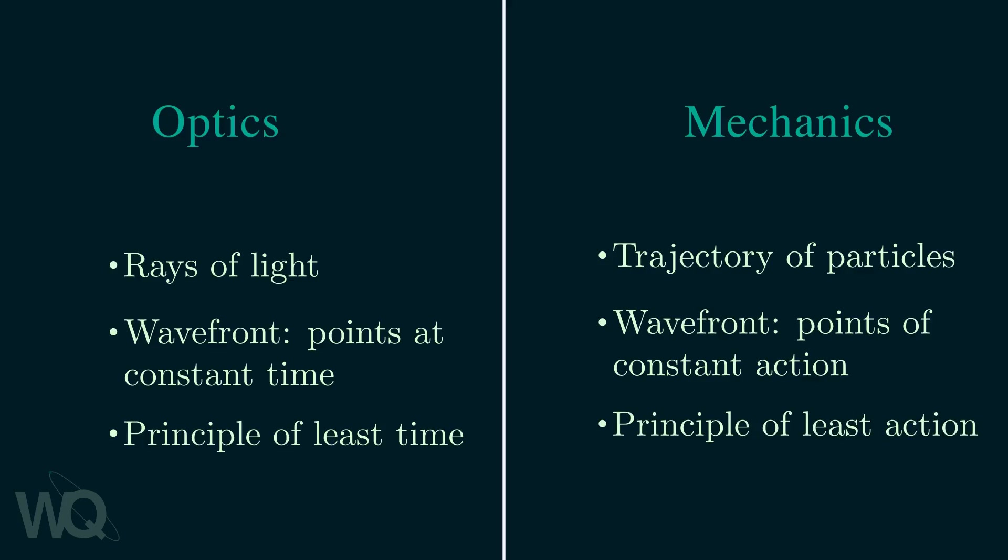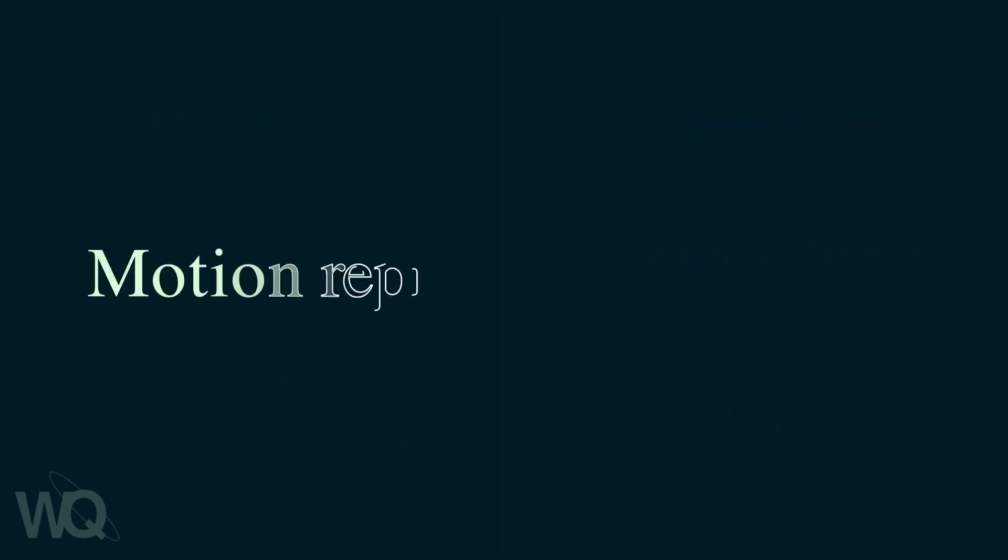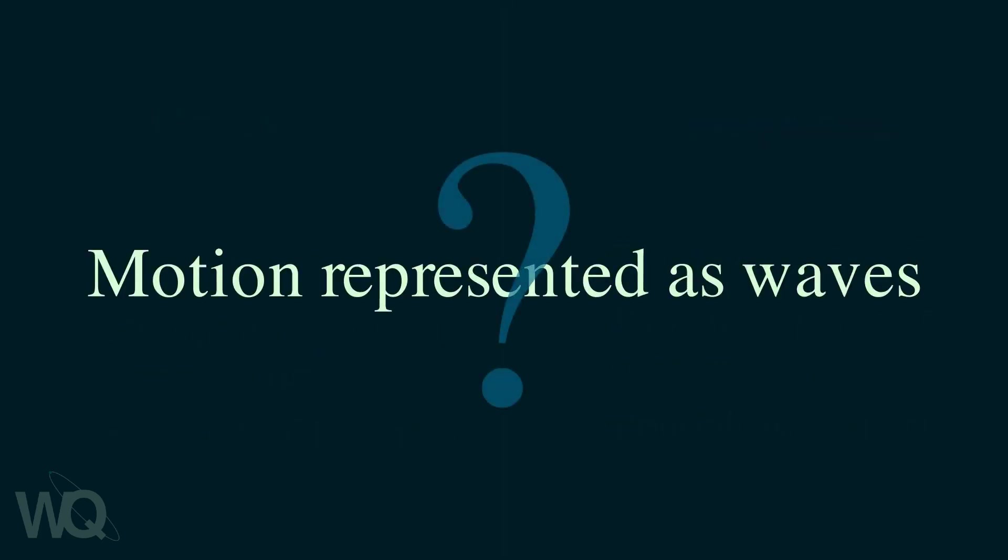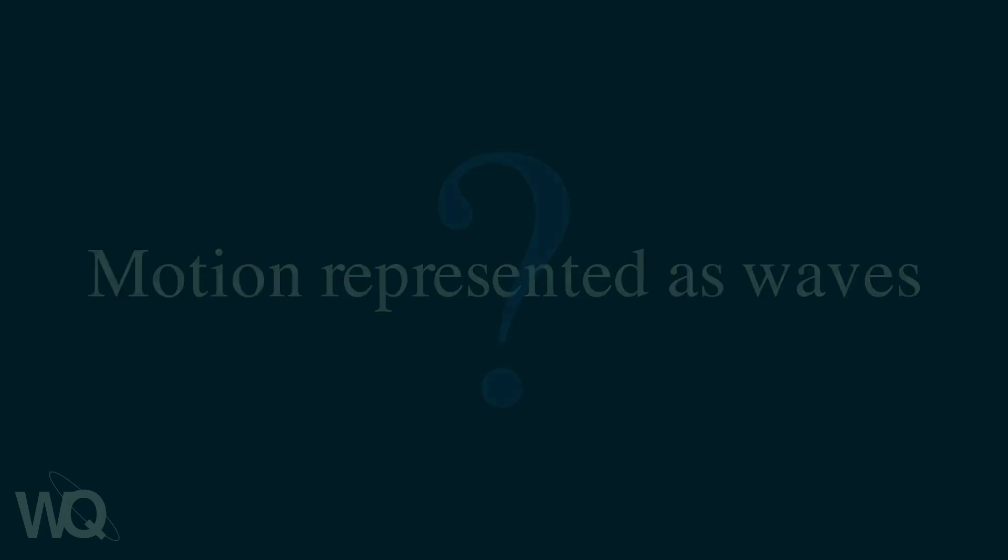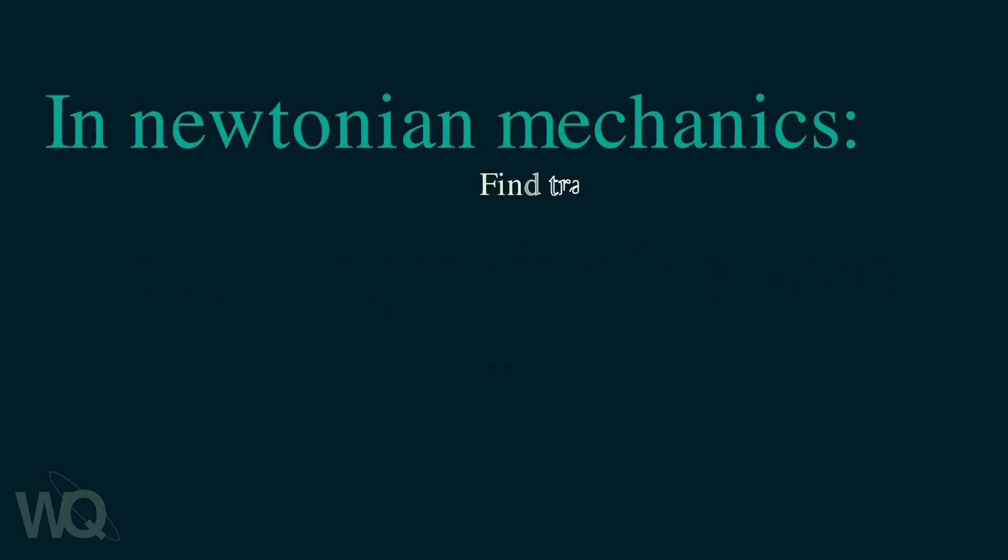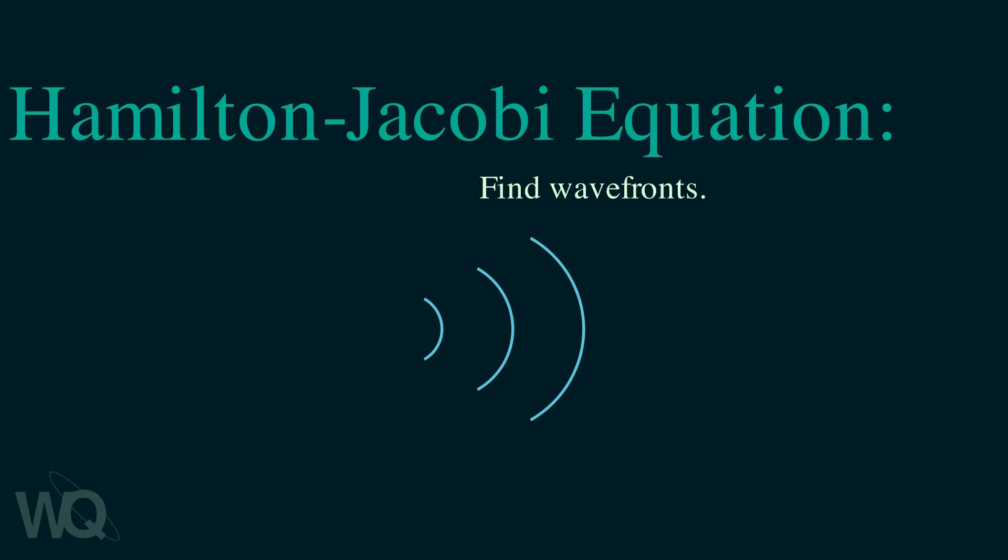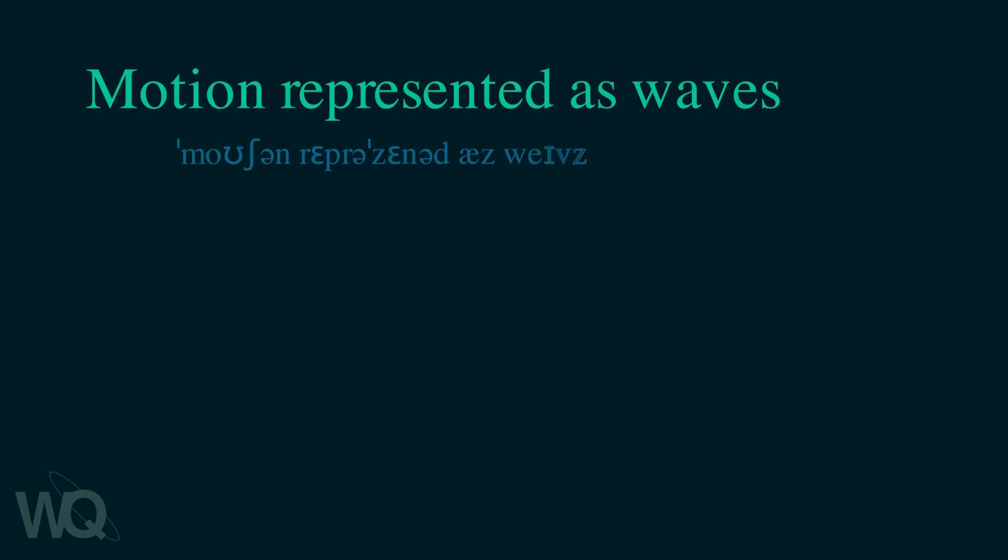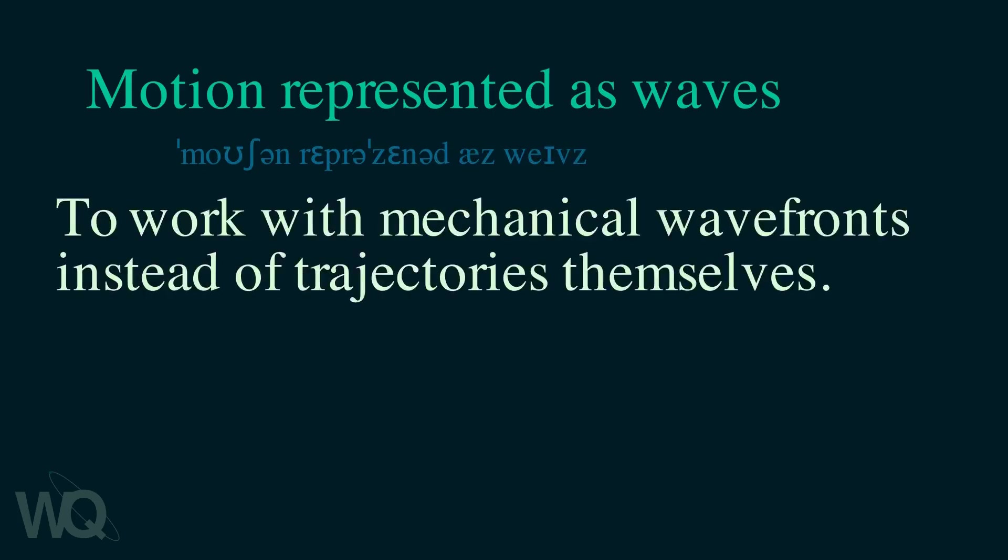With this in mind let's come back to our original question. In what sense is the particle's motion represented as waves? Newtonian mechanics for instance computes the trajectory of a particle. But we know that we can just switch back and forth between trajectories and mechanical wave fronts. So instead of working with trajectories we could also work with wave fronts. And this is exactly what the Hamilton-Jacobi equation does. It calculates the wave fronts instead of the trajectories. And it is in this sense that we say that the motion of a particle is being represented as waves.